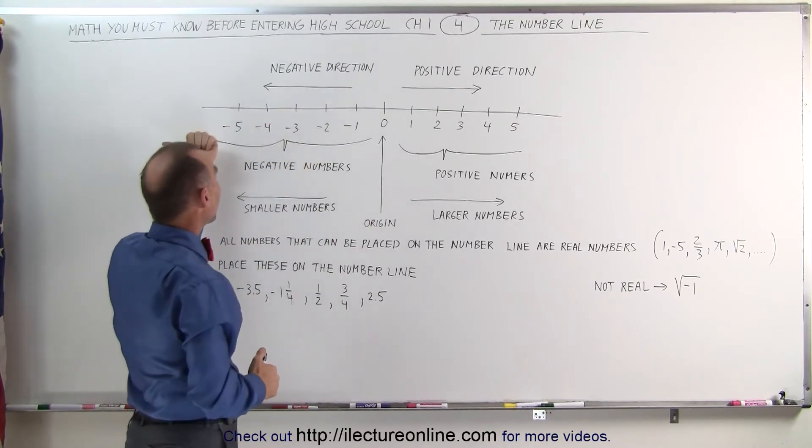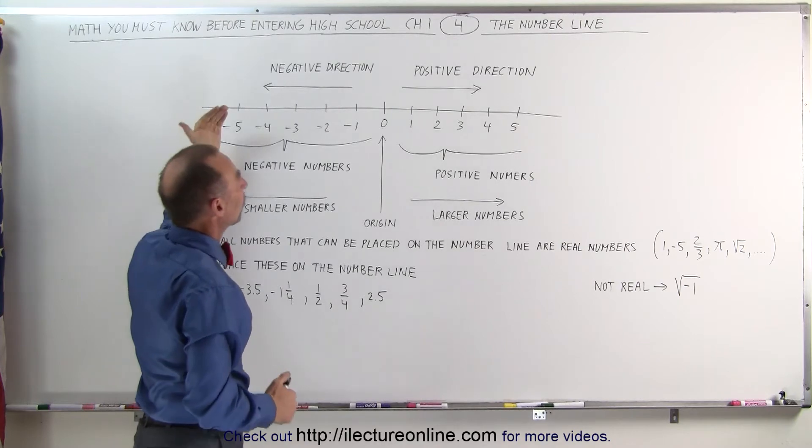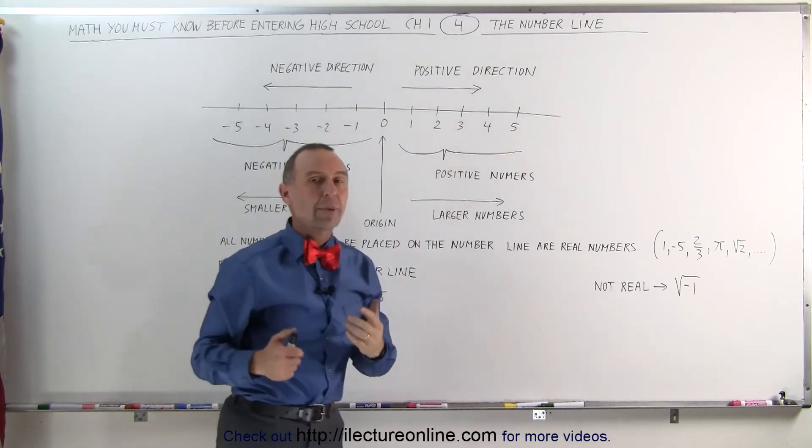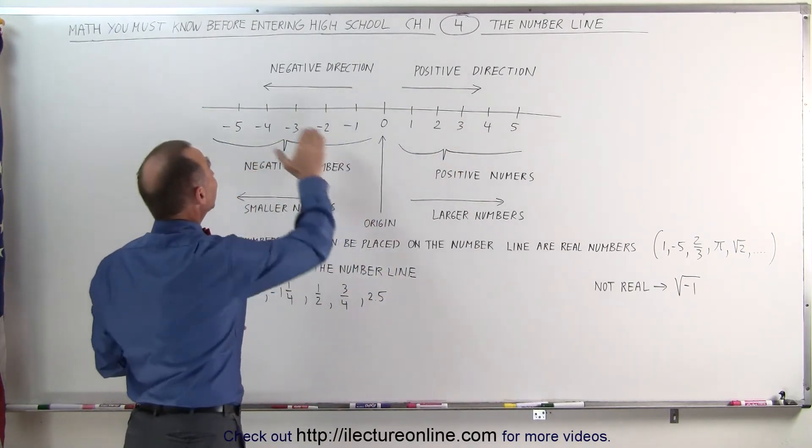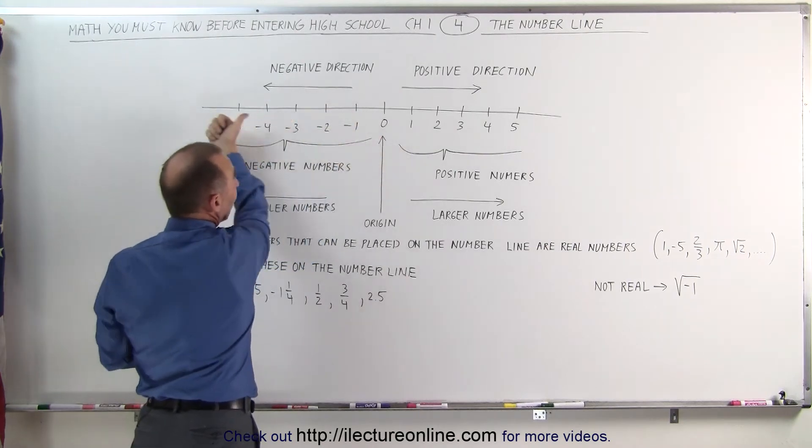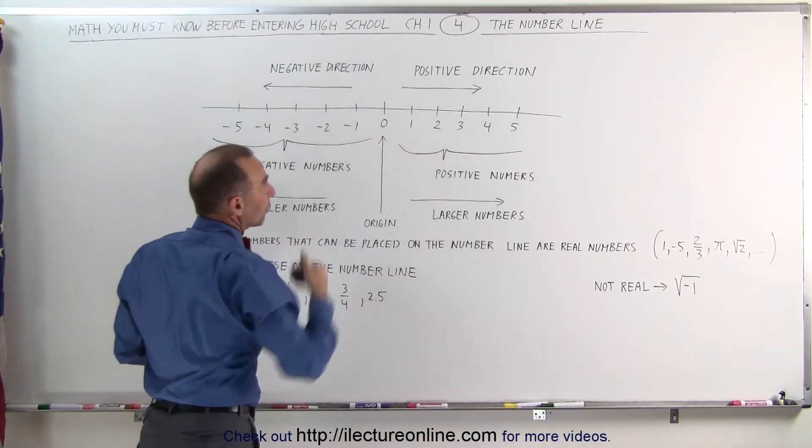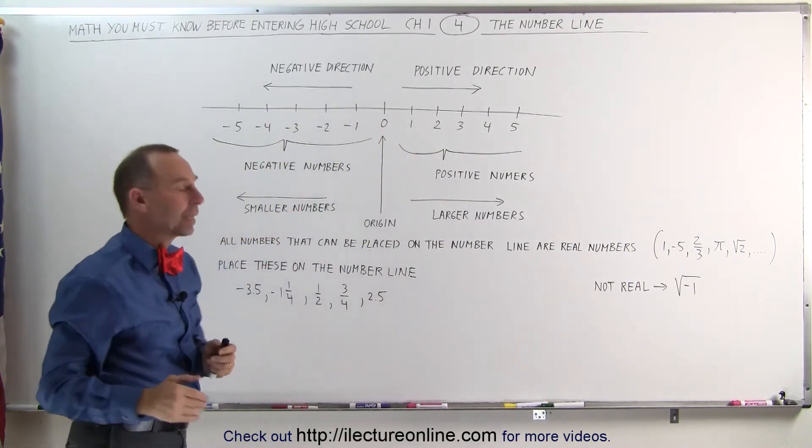Notice that when we point to the left we call that the negative direction, when we point to the right we call that the positive direction. We can be on the negative side of zero and move to the right in the positive direction, meaning the numbers will be getting bigger.